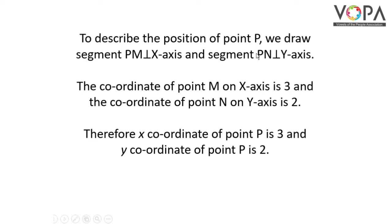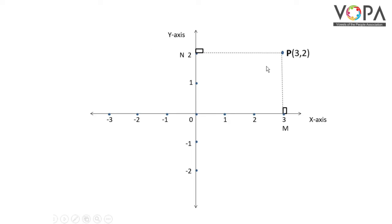To describe the position of point P, first we draw segment PM perpendicular to X-axis and segment PN perpendicular to Y-axis. See, in this figure, we can draw PM perpendicular to X-axis and PN perpendicular to Y-axis. The coordinate of point M is 3. Therefore, X coordinate of point P is 3.